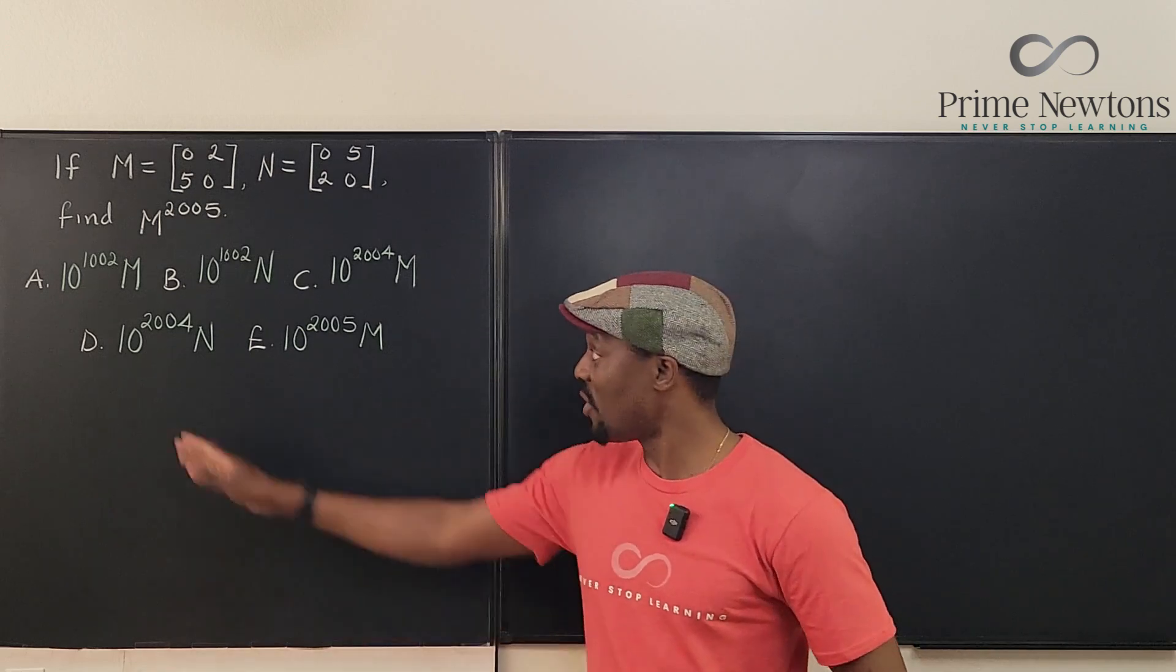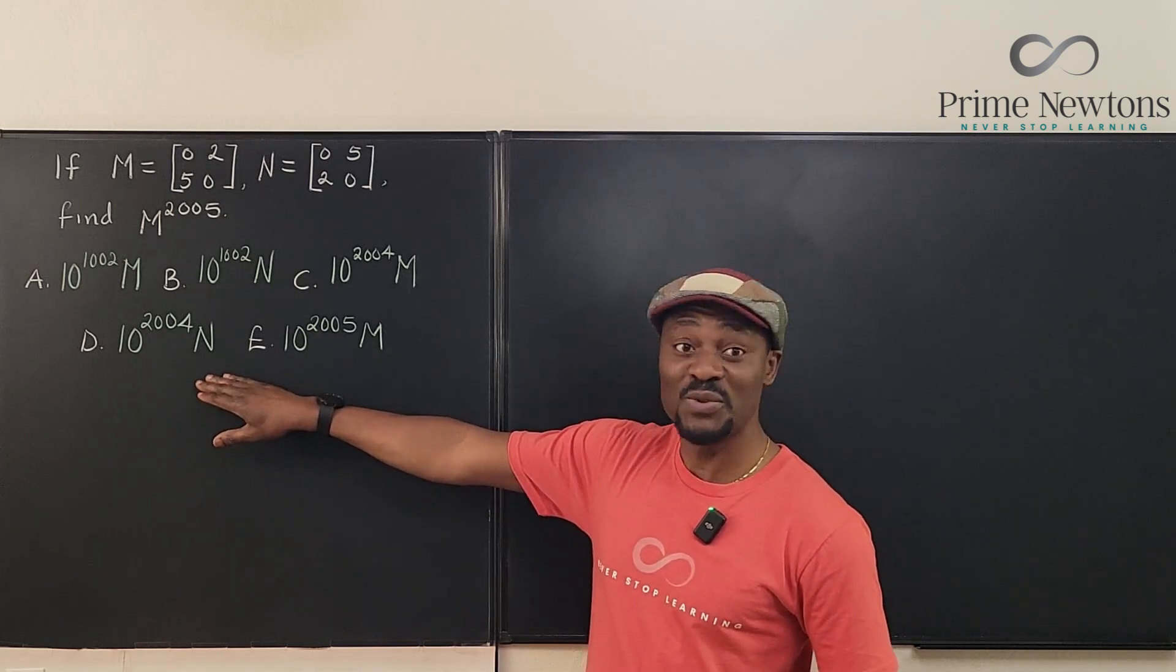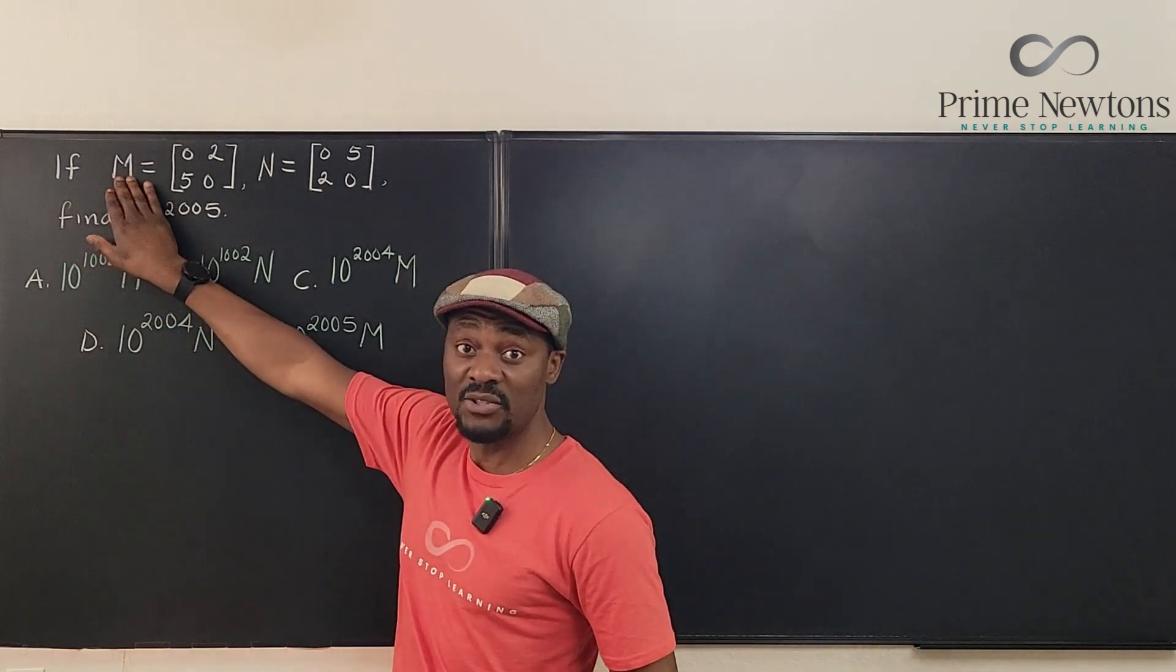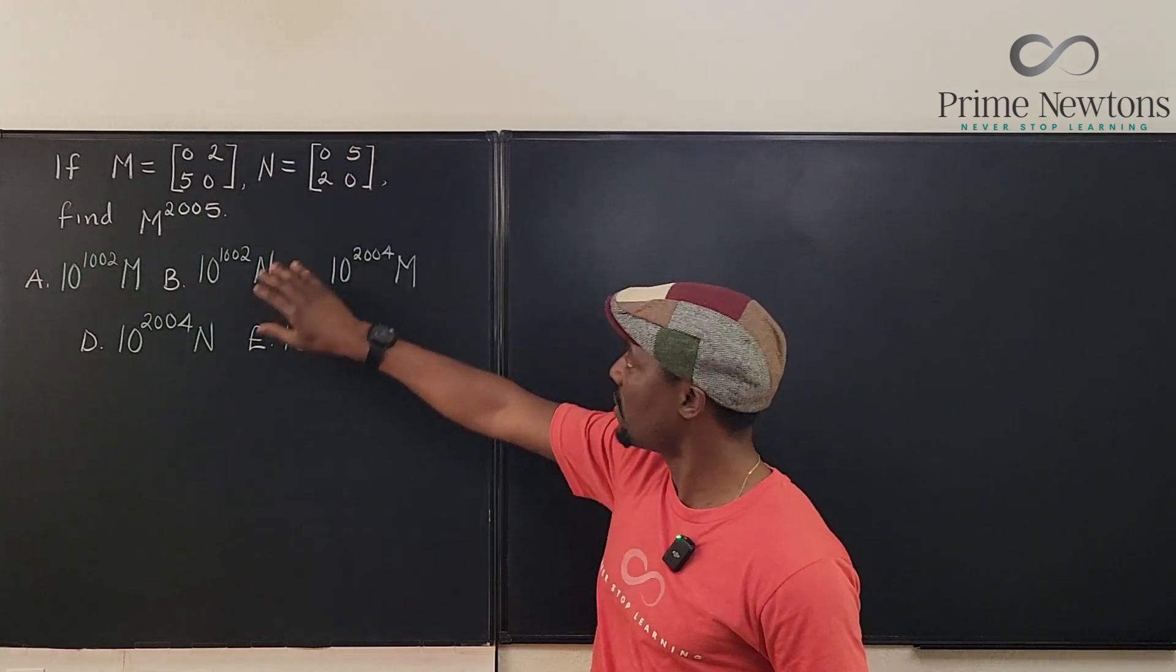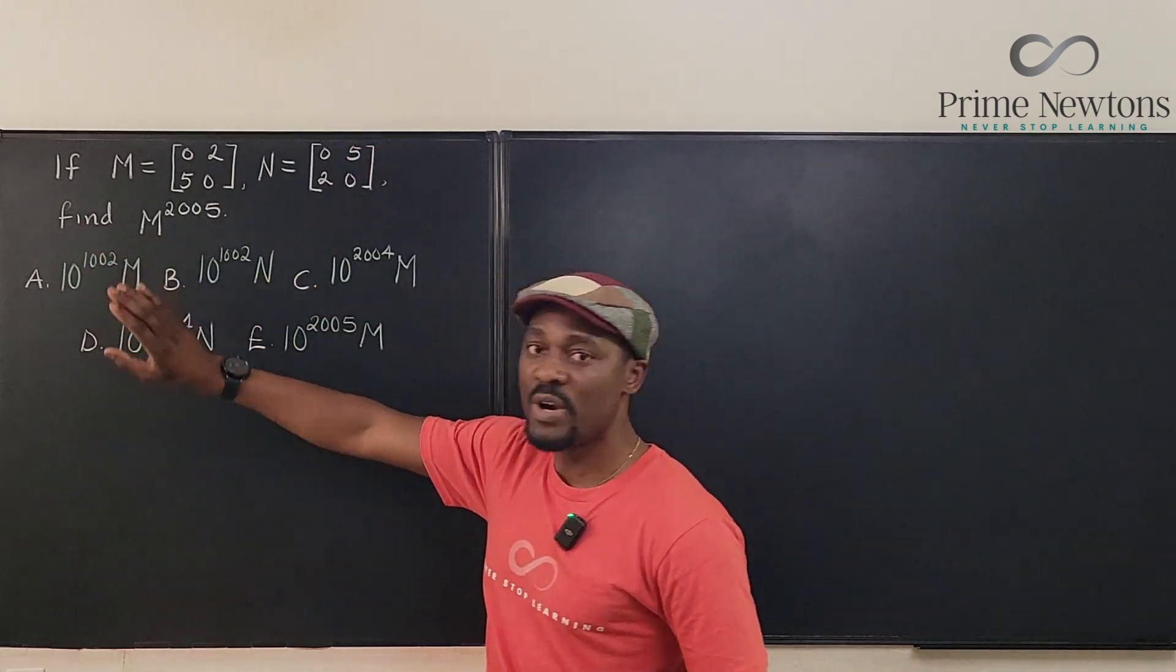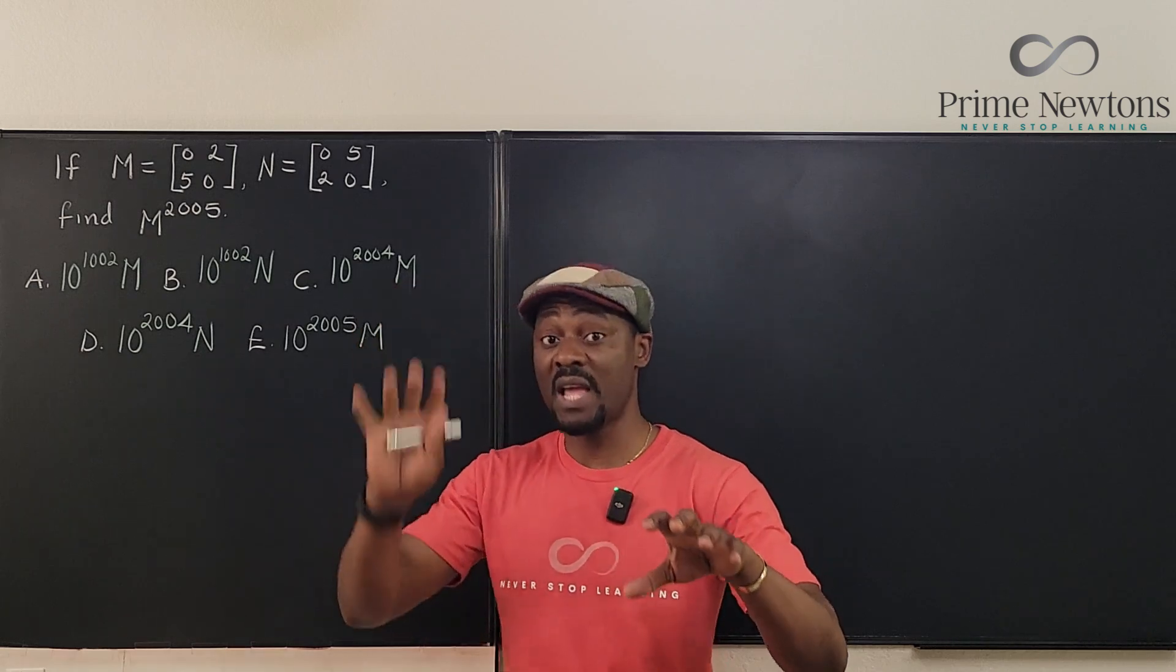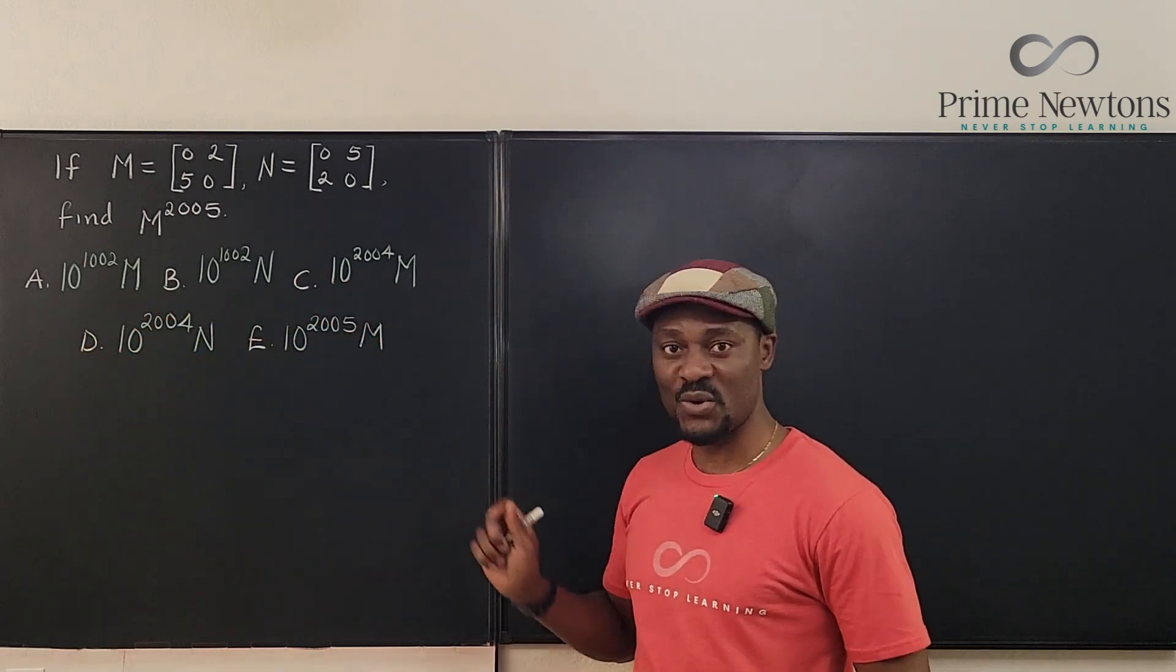We have options. You'll always have options on this test. This is a question from 2005. If M is a matrix [6 2; 5 0] and N is another matrix [2 2; 0 0], what is M raised to power 2005? It means if you take M and multiply M by itself 2005 times, which of these is going to be your answer.